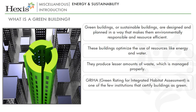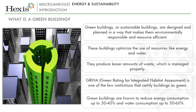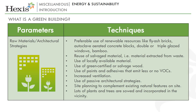GRIHA — Green Rating for Integrated Habitat Assessment — is one of the few institutions that certify buildings as green. Green buildings are known to reduce energy consumption up to 30–40% and water consumption up to 50–60%. Here are a few techniques that make a building green.